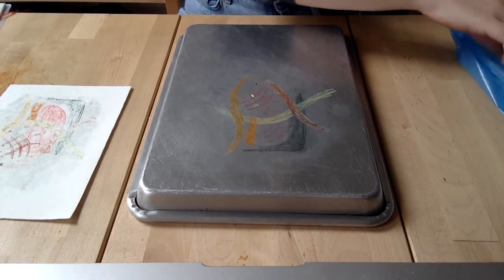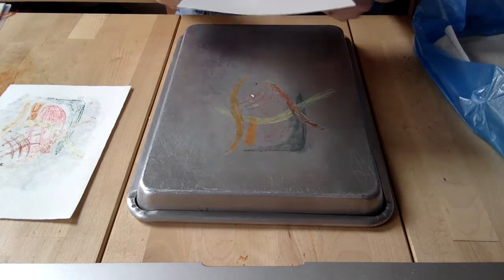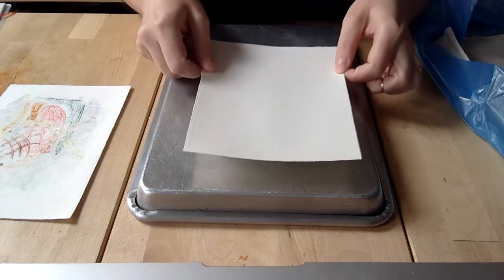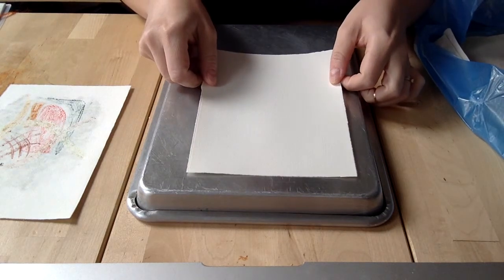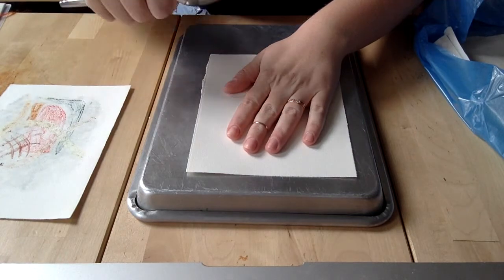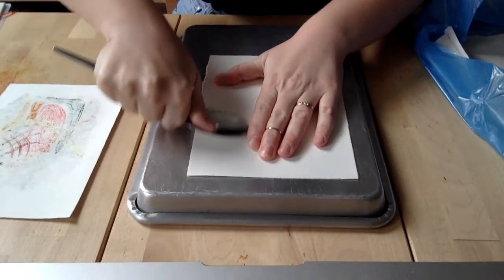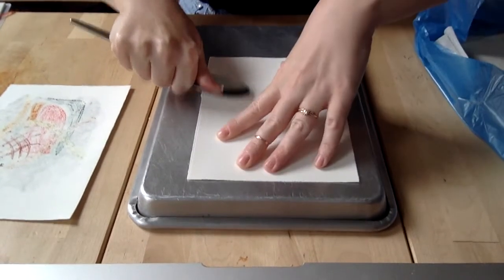So what I'm going to do is I'm going to take another piece of paper out of my wet pack, and I'm going to place it over my image that I've created again. I have my trusty spoon for pressing, and I'm going to go along my paper just as I did before.